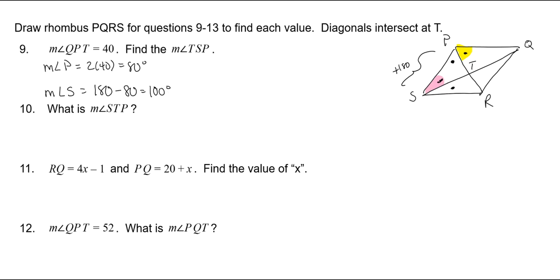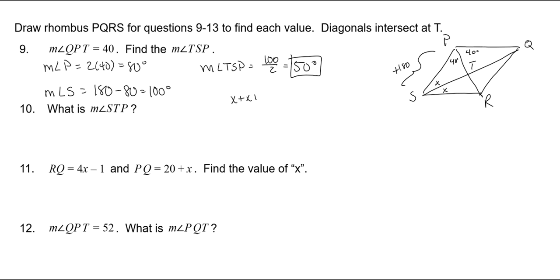The diagonals bisect the angles. So angle QPT is 40, which means the other half is also 40. You're finding the corresponding angle TSP, which is the same measure. You could have set up: X plus X plus 40 plus 40 equals 180 and solved algebraically—you'd get the exact same answer.